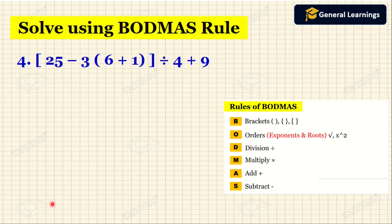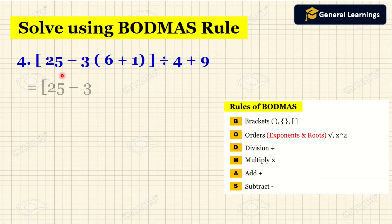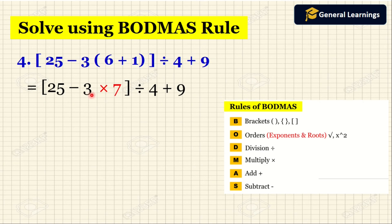Now we will see another example. Here they have given: whole bracket 25 minus 3, and inside the bracket they have given 6 plus 1, then divided by 4 plus 9. There are two brackets, so first we need to solve the innermost bracket, which is 6 plus 1. That equals 7, and we write the remaining as it is.